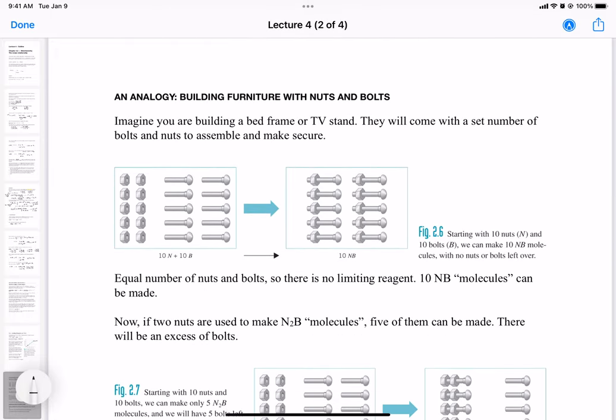Okay, so let's use an analogy here to demonstrate a limiting reactant or reagent. For example, imagine you're building a bed frame or TV stand. It usually comes with a set number of bolts and nuts to assemble and make secure the bed frame or TV stand. Usually you have the right number of nuts and bolts. If you don't, you can't securely make the TV stand or bed frame. So it's going to be an incomplete product, like an incomplete reaction. You make less product than you thought you would.